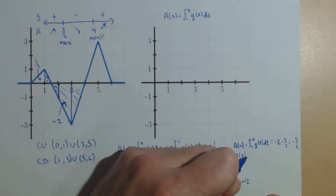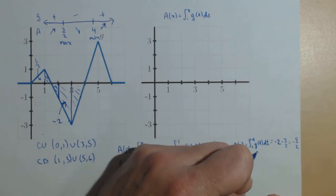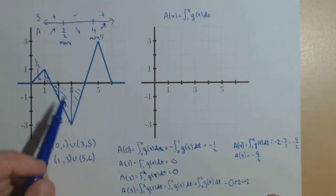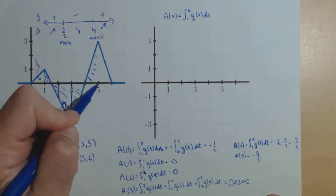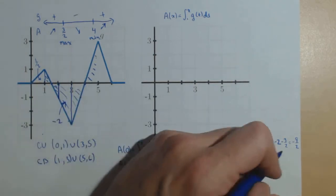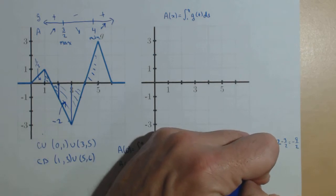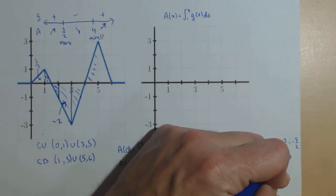A of 5, we're going to treat it similarly. We know from 1 to 4, it's negative 9 halves. So, we just need to do our accumulation here from 4 to 5, which comes out to be a positive 3 halves. So, we get negative 6 halves or negative 3.